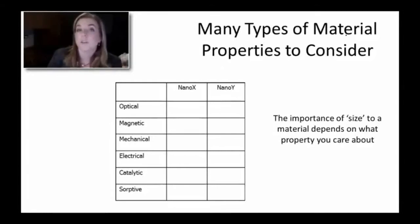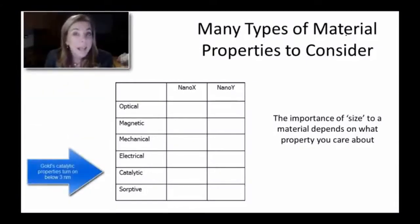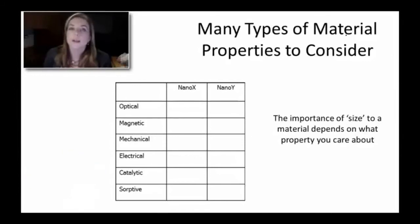So for example, let's take gold. Gold's optical properties change, you could argue, at sizes as large as 80 nanometers. But its chemical properties don't really change until you get to 3 nanometers. So depending on the property you care about, the right size to make gold is going to vary. There isn't really one answer to what size, how small do you have to go to get this change.